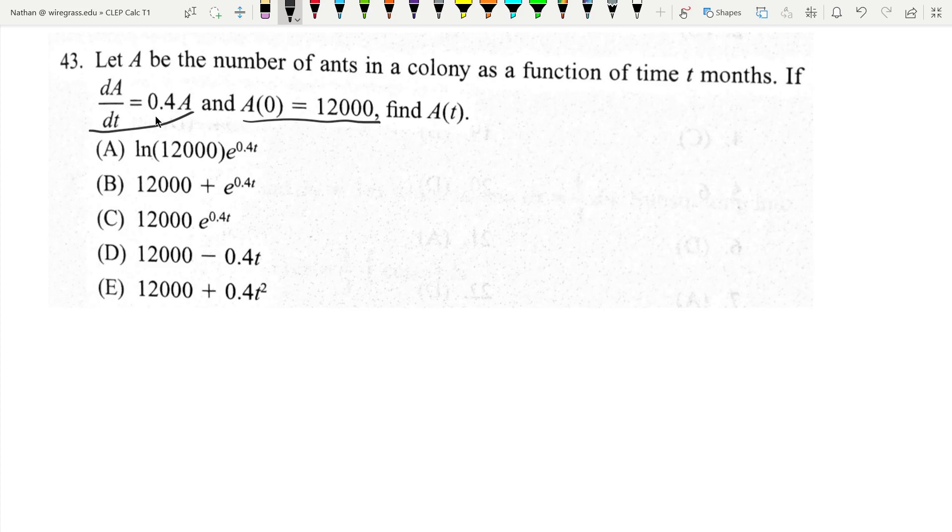And the only way, the only function that really follows this is going to be A equaling some constant times e to the some constant times t. And the constant here is going to end up being 0.4 times t.